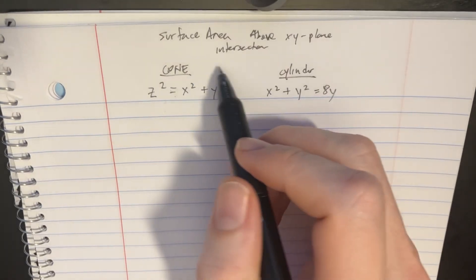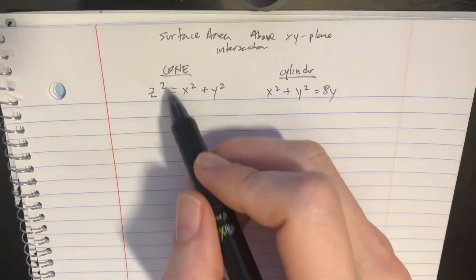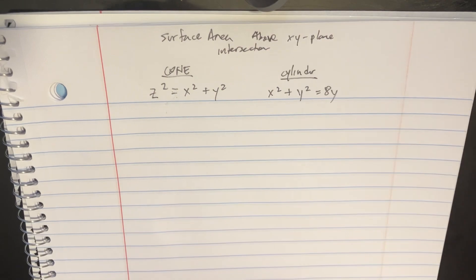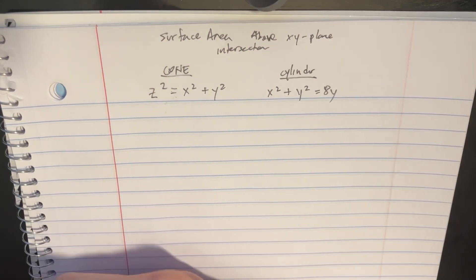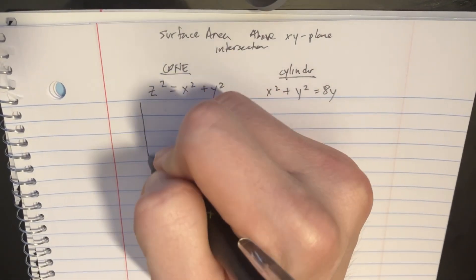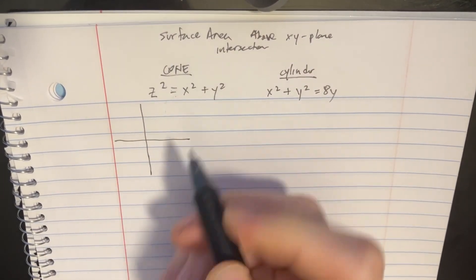We're asked to find the surface area of the intersection between this cone and the cylinder above the xy-plane. So if we were to draw this, it's going to look something like this.